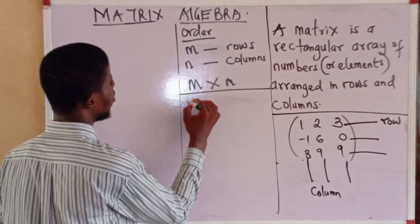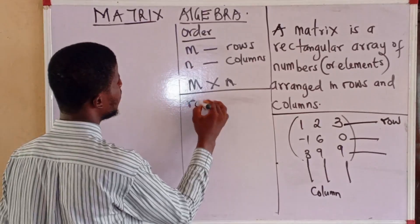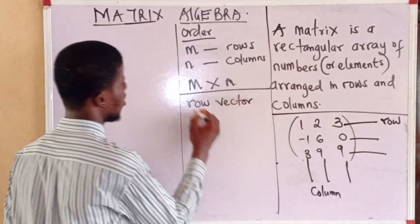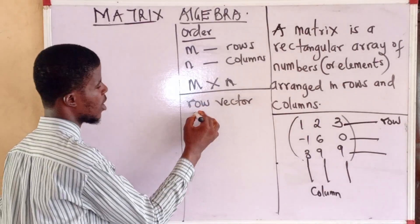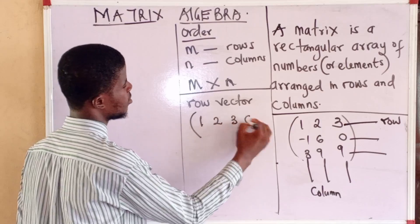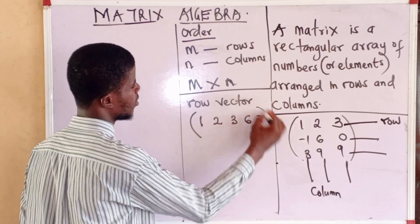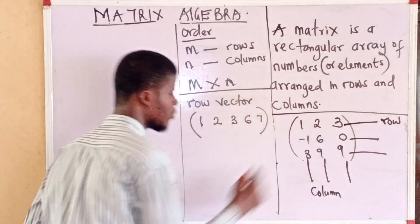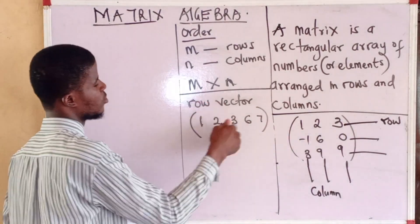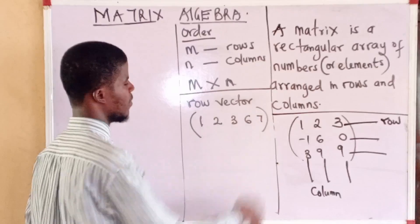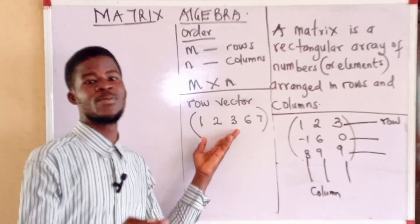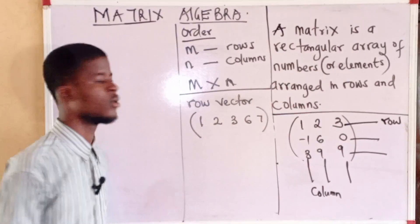A matrix that has one row is called a row vector. It has one row — for example, 1, 2, 3, 6, 7. This is a row with 5 columns. It has one row and multiple columns, so this is a row vector.